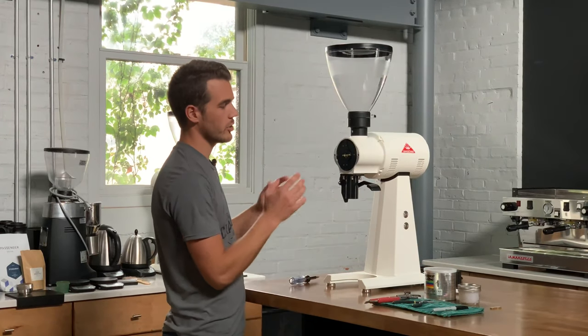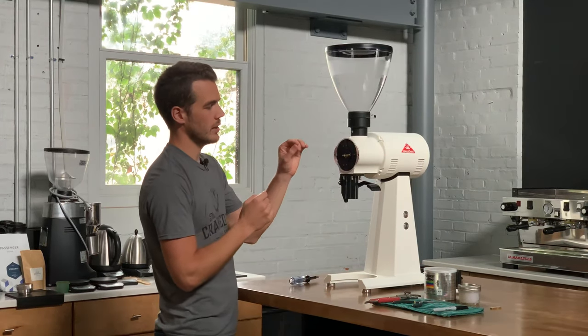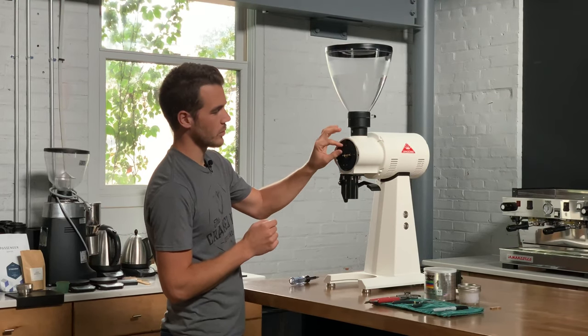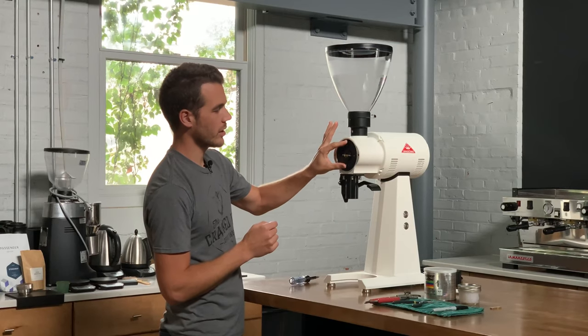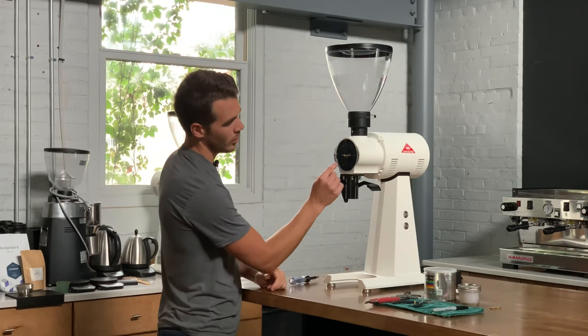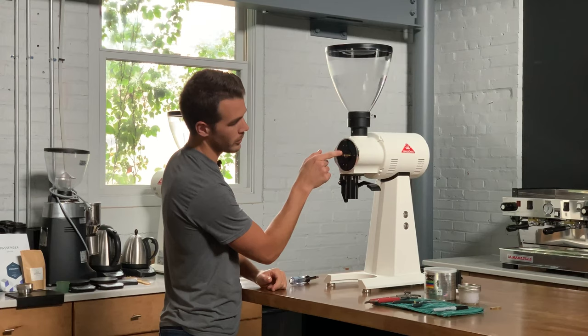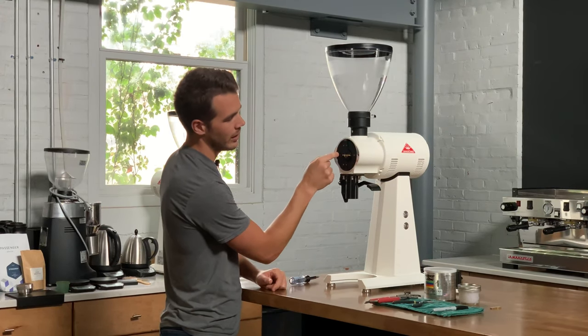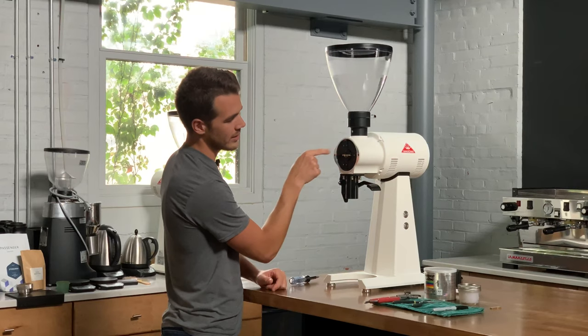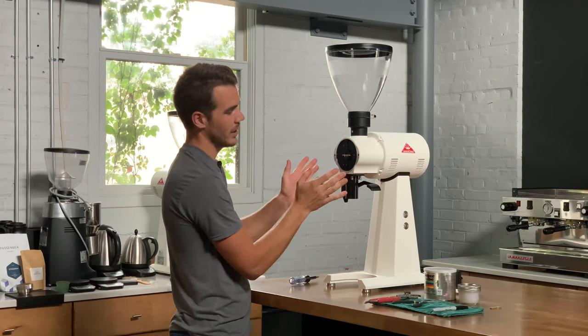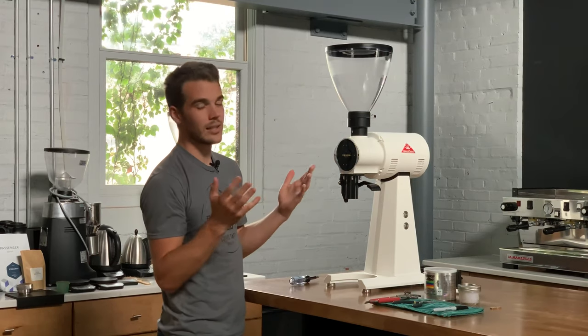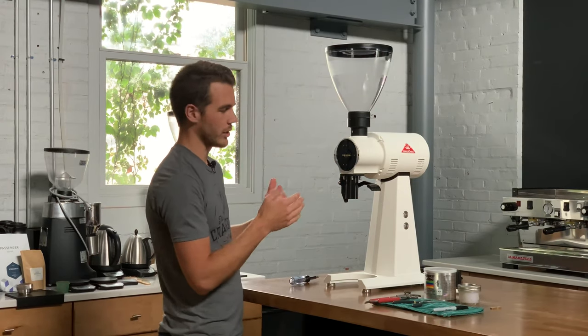And the first thing that we're going to want to do is to mark where the shaft is in comparison to the burr carrier here. Essentially, I just have one side of the shaft marked with Sharpie, and then the corresponding side of the burr carrier just scratched a little X in there, just so we can put this back the exact same way that we take it apart. And that does matter for the alignment of the grinder.